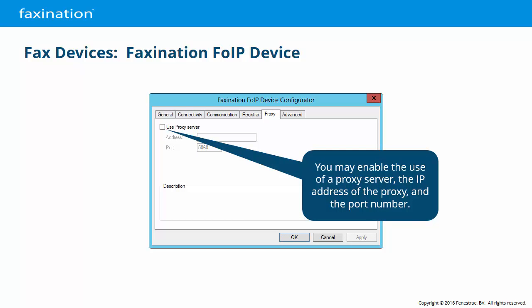On the Proxy tab, you may enable the use of a SIP proxy. Proxies are required for SIP authentication in some environments. When enabled, you can specify an address and a port number for proxy communication.